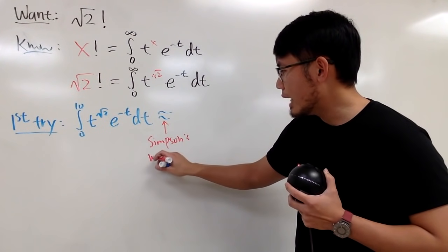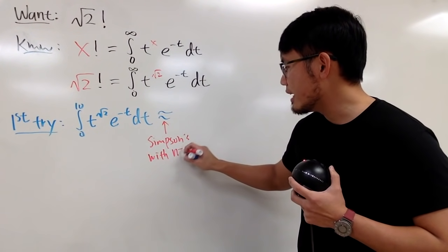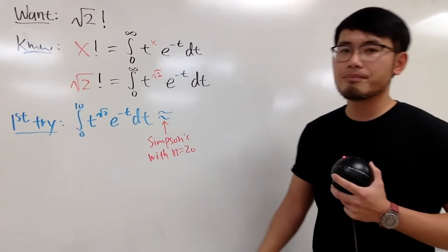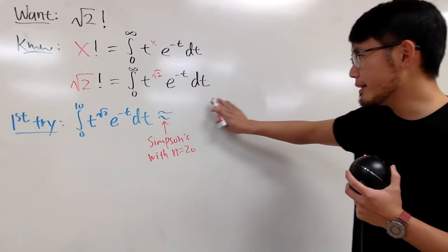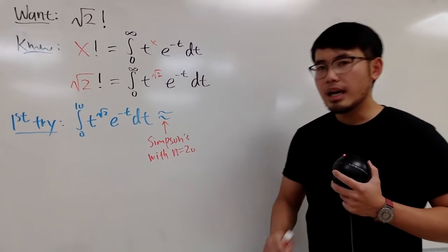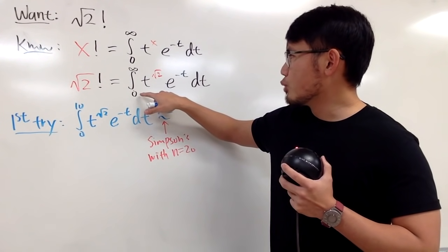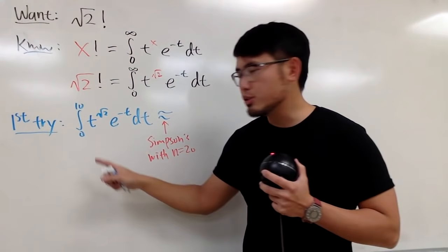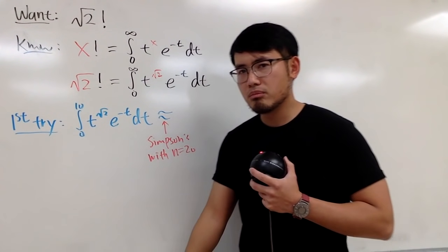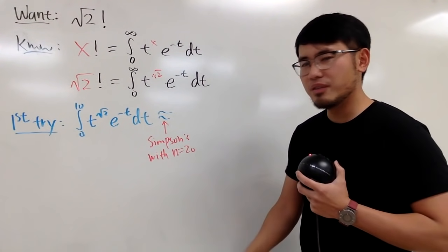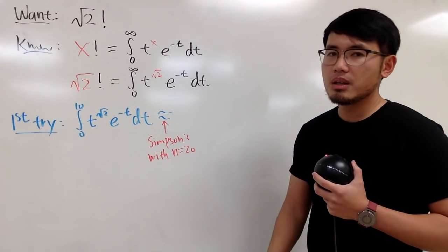Suppose, we are going to use Simpson's rule. And when you use Simpson's rule, you have to pick an n value, and let's just say n is equal to 20. And I'm not going to write down the answer right here for you guys. And you might be wondering, this is improper integral going from 0 to infinity, and I just use from 0 to 10. Is that even enough? Even though I say n is equal to 20.